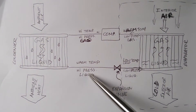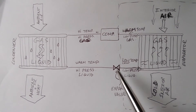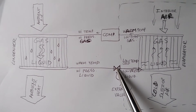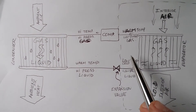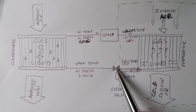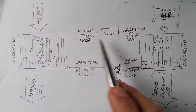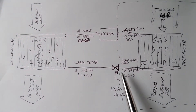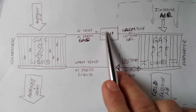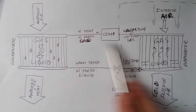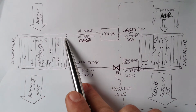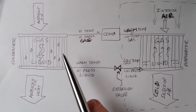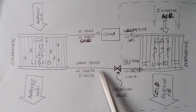Now you have a warm but cooler liquid still at high pressure, and you run it through an expansion valve. The expansion valve is a calibrated orifice — a small restricted hole — that provides enough restriction for the compressor to push up against and build up pressure on that side of the system. Without that restriction, the compressor would just circulate gas without raising pressure.